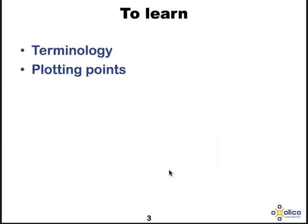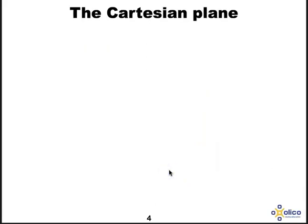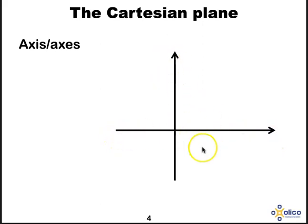So let's learn some terminology and how to plot points. First off, we have an axis or two or more axes. So this is an axis and these are axes.